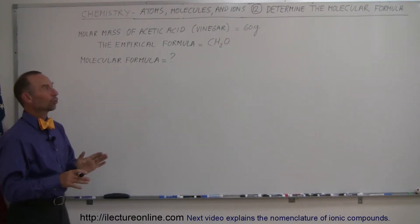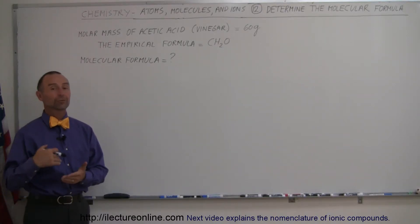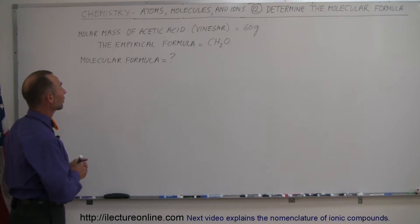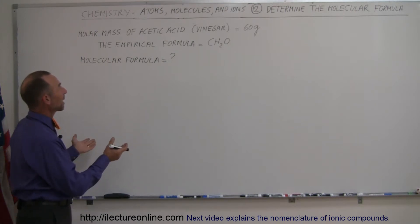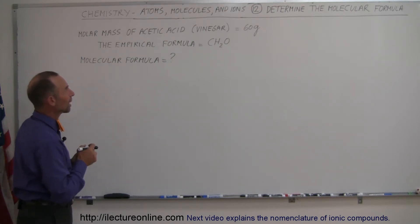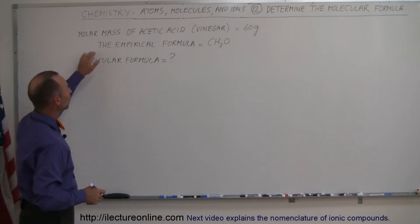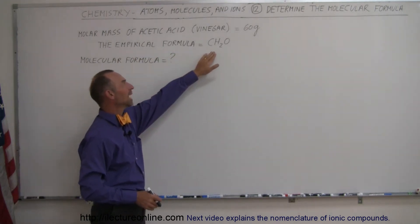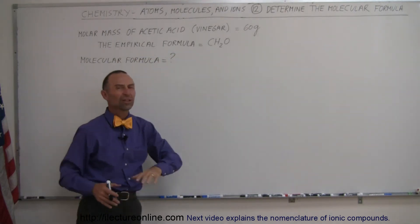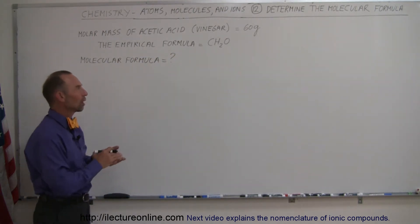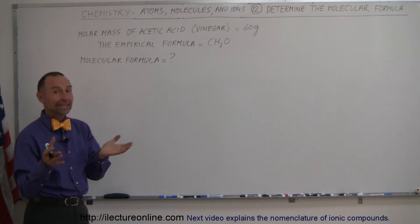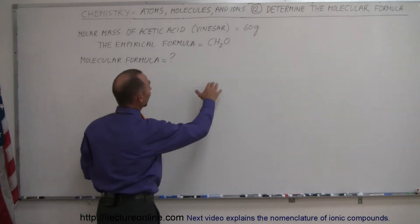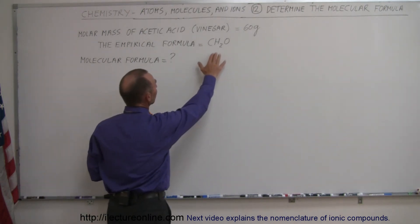In this example, we're going to try and determine the molecular formula of a particular sample. Notice that we measured the mass of a mole — we know that it was 60 grams — and we also knew the empirical formula of this sample, which is CH₂O, which gives us the simplest ratio of the atoms contained within the molecule of acetic acid, which is also known as vinegar.